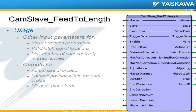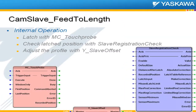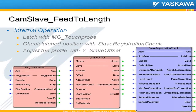This block really does an excellent job of keeping things lined up. We found in practicality that people try to do that additional recalculation, but it doesn't matter — this block does the job all by itself. Inside the block are a couple of simple things: a latch with an MC touch probe, then a check latch position with a slave registration check block, and then adjusting the profile with a Y slave offset.